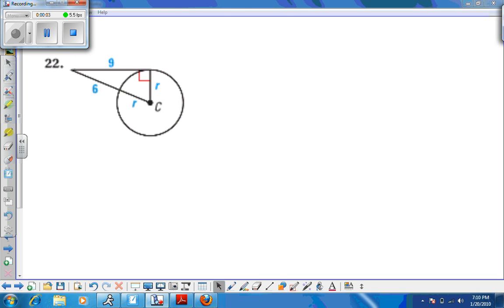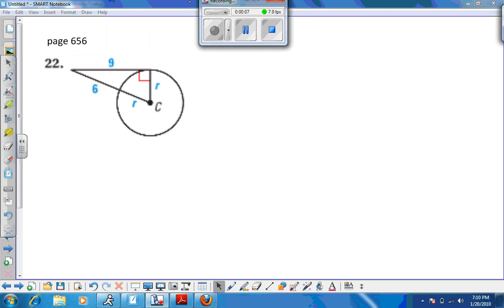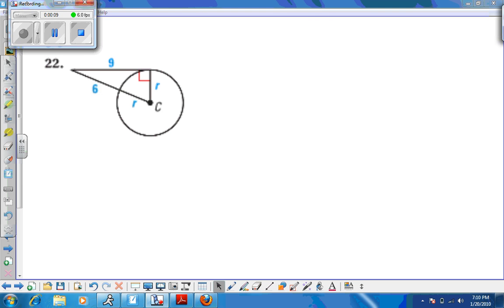Hi, geometry kids. I wanted to go over a problem with you. This is number 22 on page 656 in your book. We have a radius drawn to a tangent segment, so we have a right angle right here.